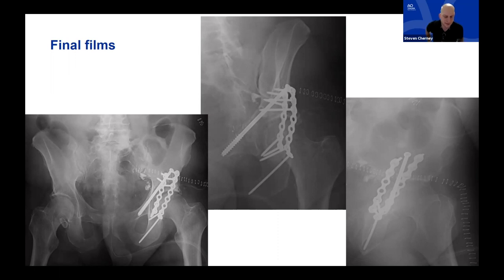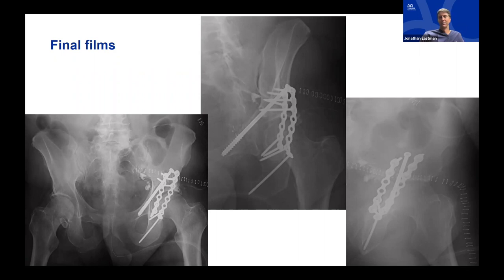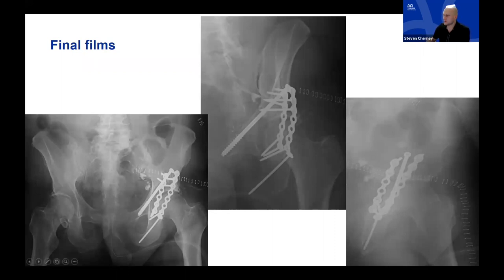John comments that this case beautifully illustrates how understanding the fracture from the start sets up your approach. He notes that in triage or sign-out, people tend to jump straight to the 3D reconstruction, which is useful for some things, but the meat of understanding comes from going through the initial AP, Judet views, and axial CT cuts — the details that get glossed over on 3D renders. You can't skip the initial radiographs.